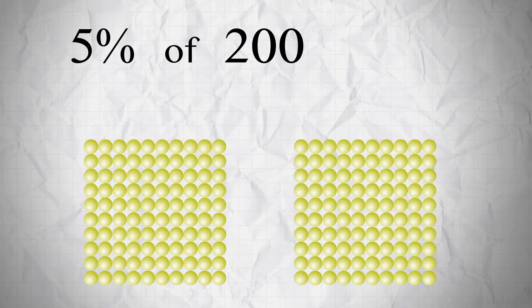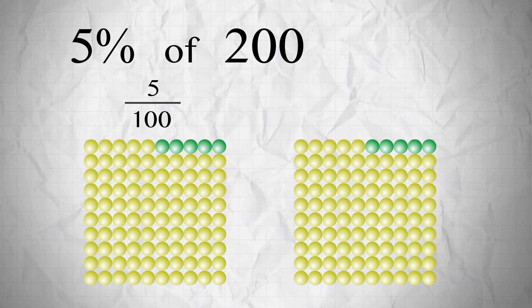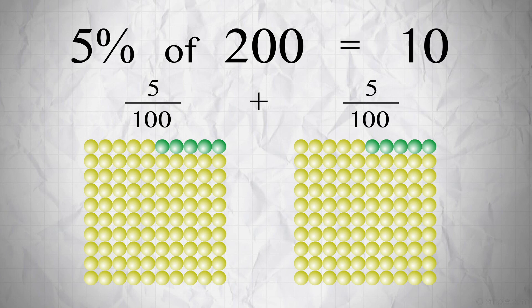Suppose there are 200 marbles and 5% of them are green. Percent means out of 100, so 5 out of every 100 marbles are green. You can think of 5% of 200 like this: 5 out of 100, plus 5 out of 100, equals 10 out of 200. So 5% of 200 is 10.